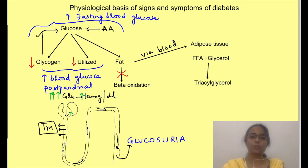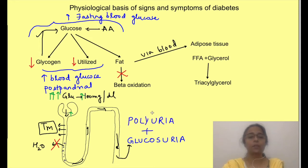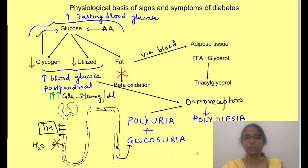The presence of glucose in the nephron acts as an osmotic pull for water, preventing the reabsorption of water also from the nephron. So water loss increases, causing increase in the volume of urine, i.e. polyuria. Due to increase in water loss from the body and hyperosmolarity of blood due to increased blood glucose concentration, water starts moving out of cells. When this happens in osmoreceptors, thirst centers are activated, causing increase in the intake of water, i.e. polydipsia. So till now we have discussed the physiological basis of fasting and postprandial hyperglycemia, glycosuria, polyuria, and polydipsia.